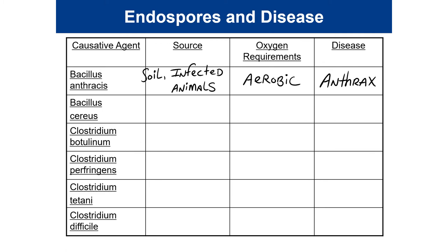A third type, GI anthrax, is the least common and starts in the intestines when large numbers of Bacillus anthracis endospores are ingested. Next on the list is Bacillus cereus, a source of food poisoning — abbreviated B. cereus, comically called 'B. serious,' though it is actually the least serious of all the endospore-based diseases.